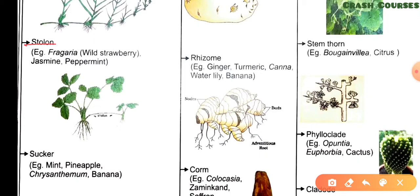The next type is stolon. In a stolon stem, branches develop from the lower part of the main stem and grow for some distance like an arc, and finally touch the ground to give rise to a new shoot. These type of stems are called stolons. Examples are Fragaria (wild strawberry), jasmine, and peppermint.